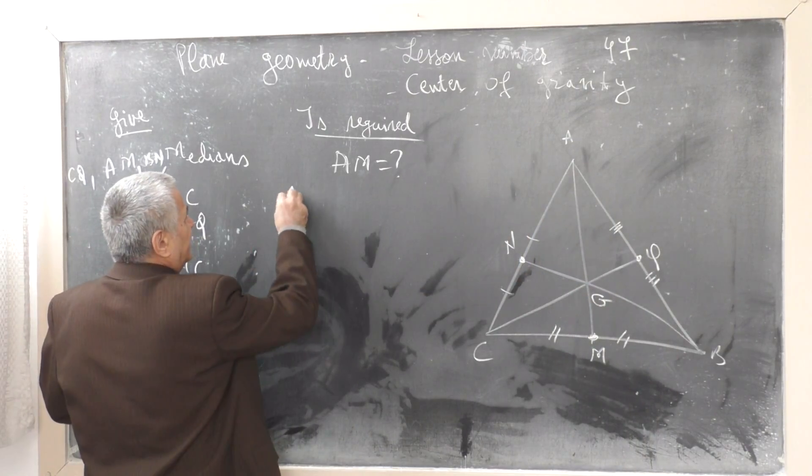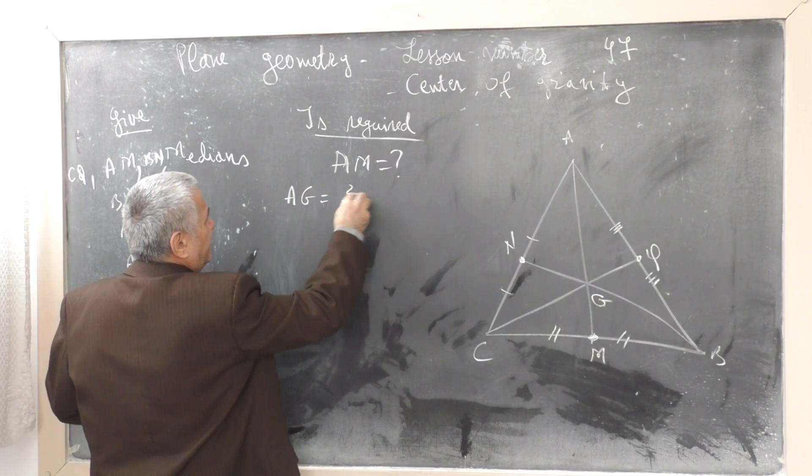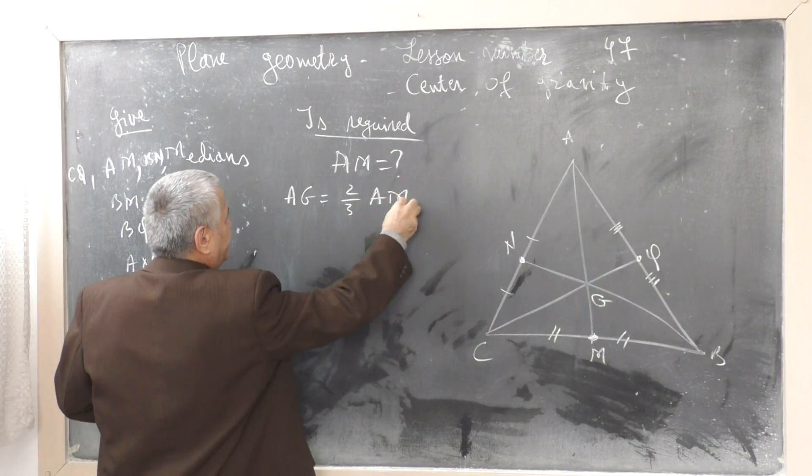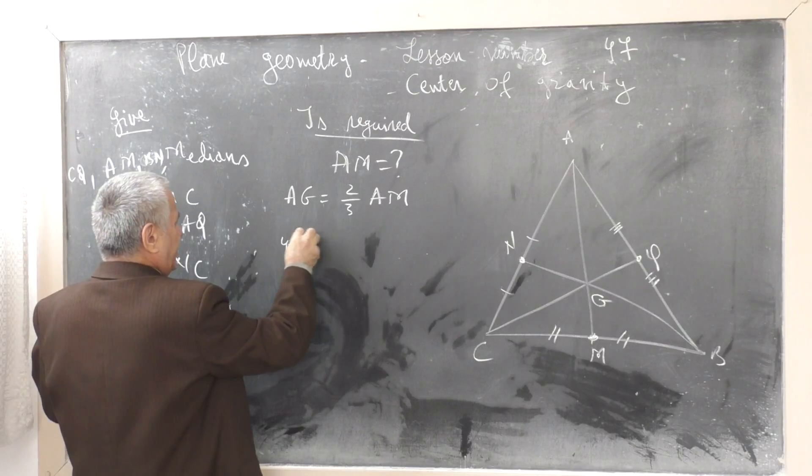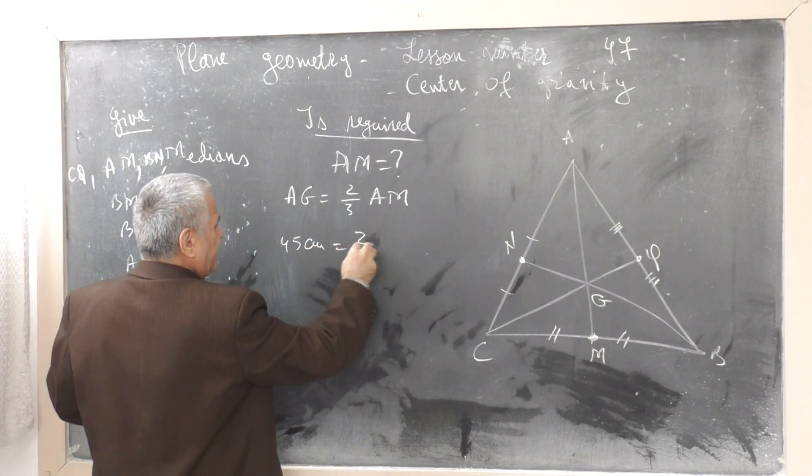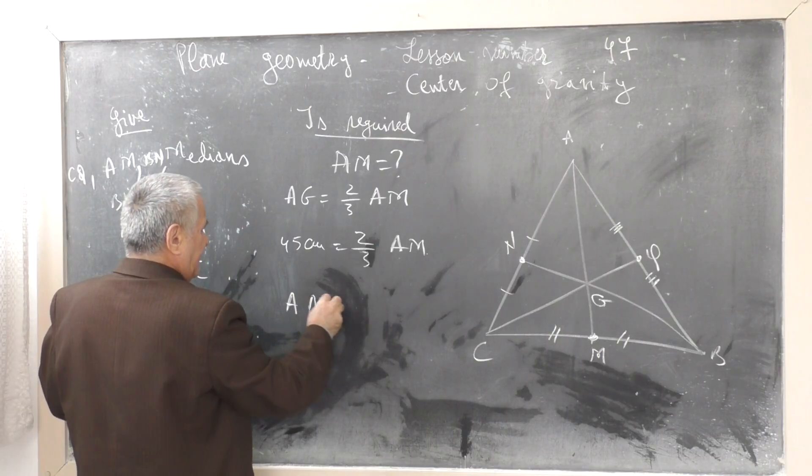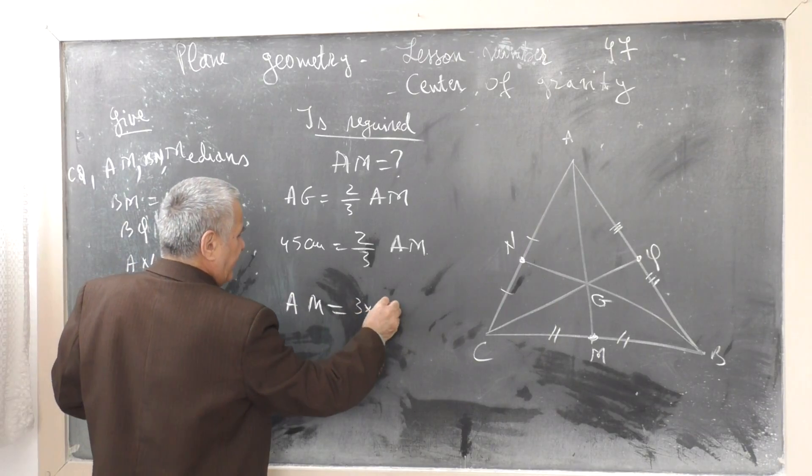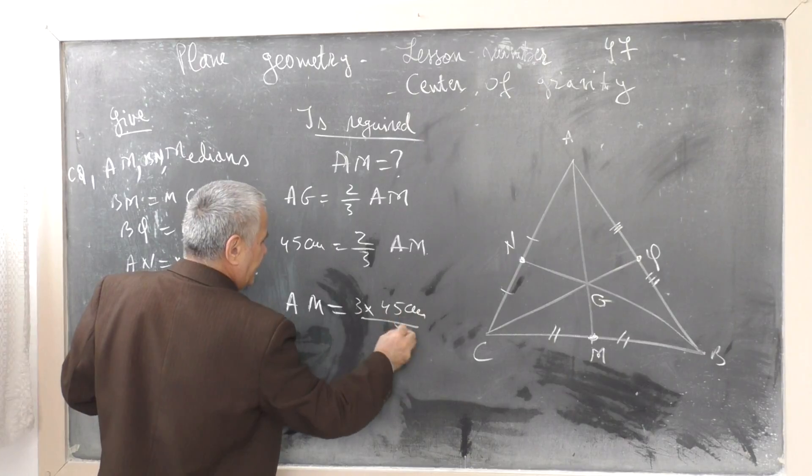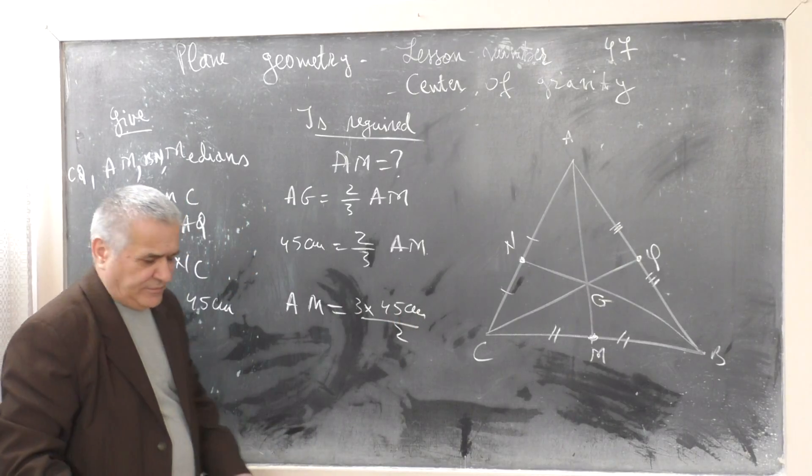Using the property that AG equals two-thirds AM: 45 cm equals two-thirds AM. Therefore, AM equals 3 multiplied by 45 cm divided by 2.